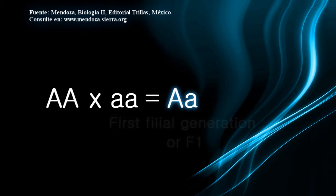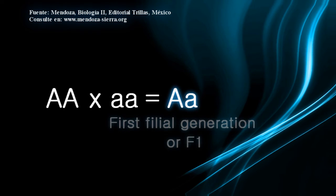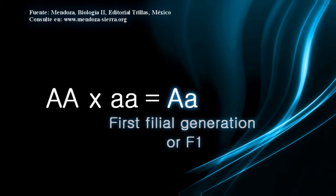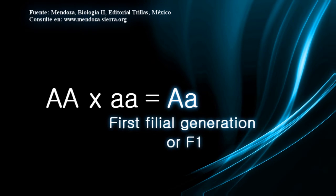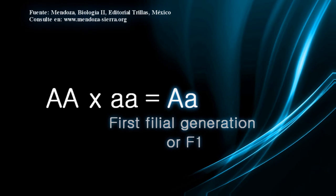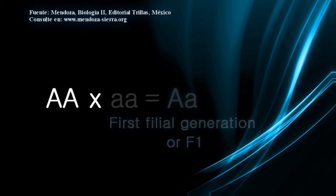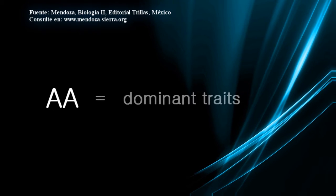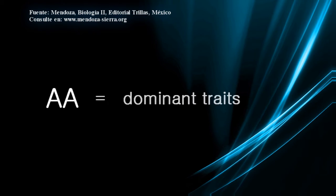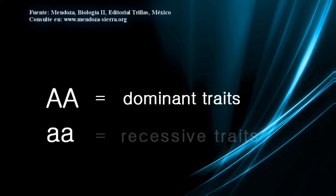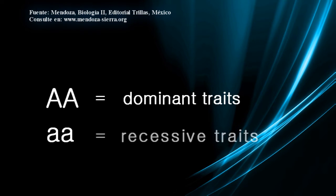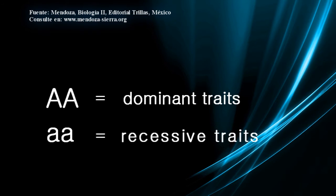This first generation of offspring coming from purebred parents is called the first filial generation, or F1. Capital letters represent dominant traits, while lowercase letters represent recessive traits.